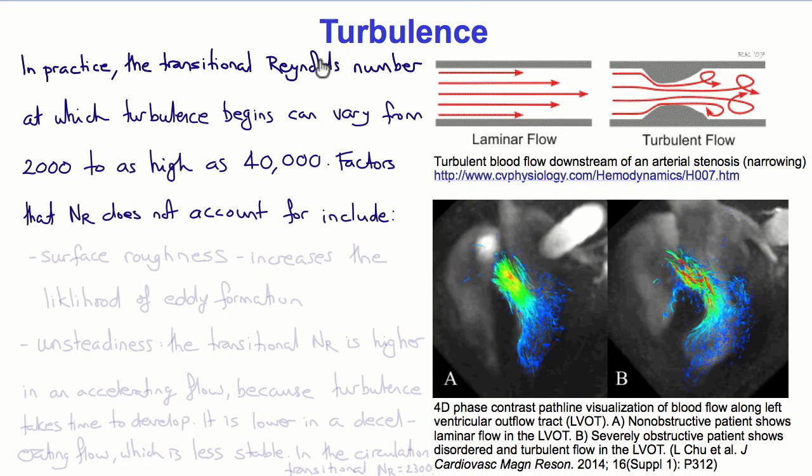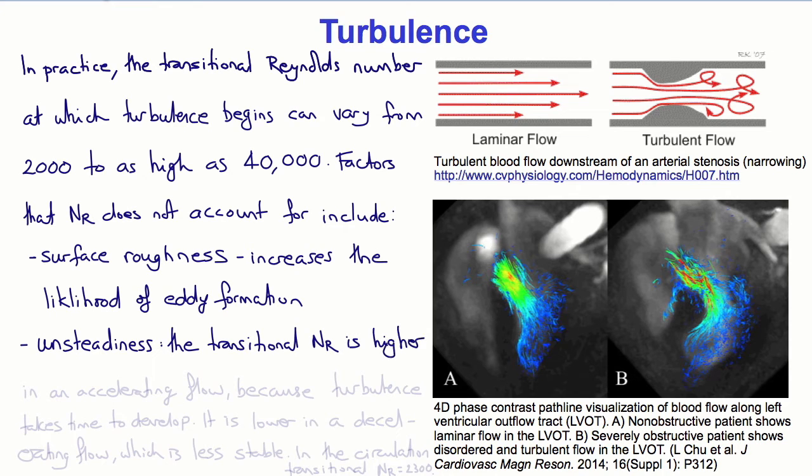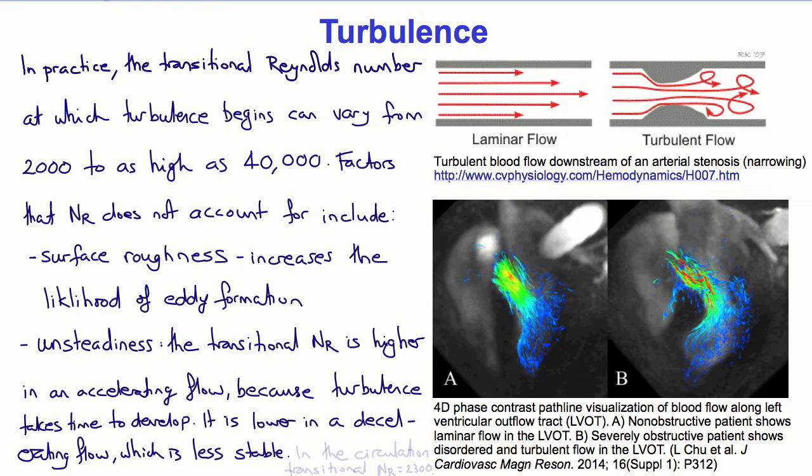If the Reynolds number is high enough, the flow can be turbulent. How high the Reynolds number needs to be in order for the flow to be turbulent depends somewhat on other factors. It can vary between 2,000 to as much as 40,000. Some of the factors that the Reynolds number does not account for include the surface roughness. The rougher the surface, the higher the likelihood of eddies forming and turbulence being created. Another determinant is unsteady flow. The transitional Reynolds number is higher in an accelerating flow because turbulence takes time to develop. On the other hand, it's lower in a decelerating flow, which is less stable. In the circulation, the transitional Reynolds number at which turbulence occurs is approximately 2,300.